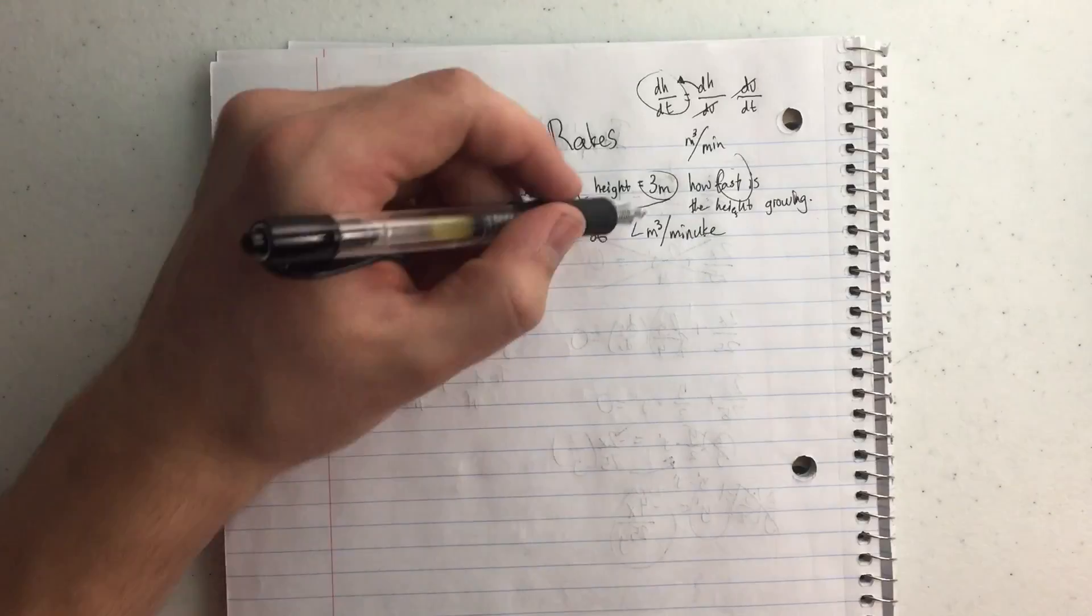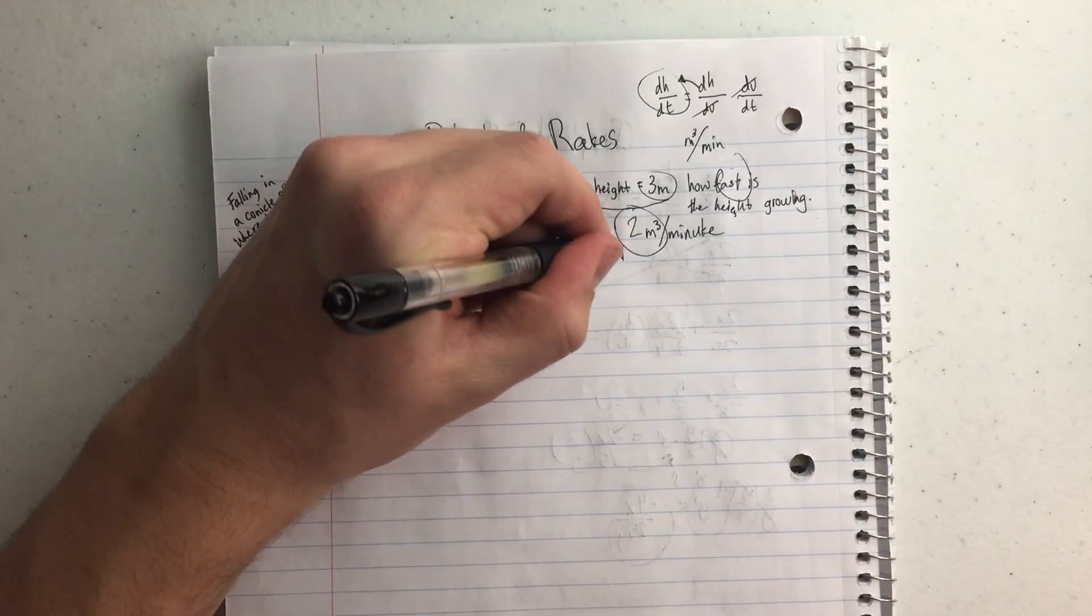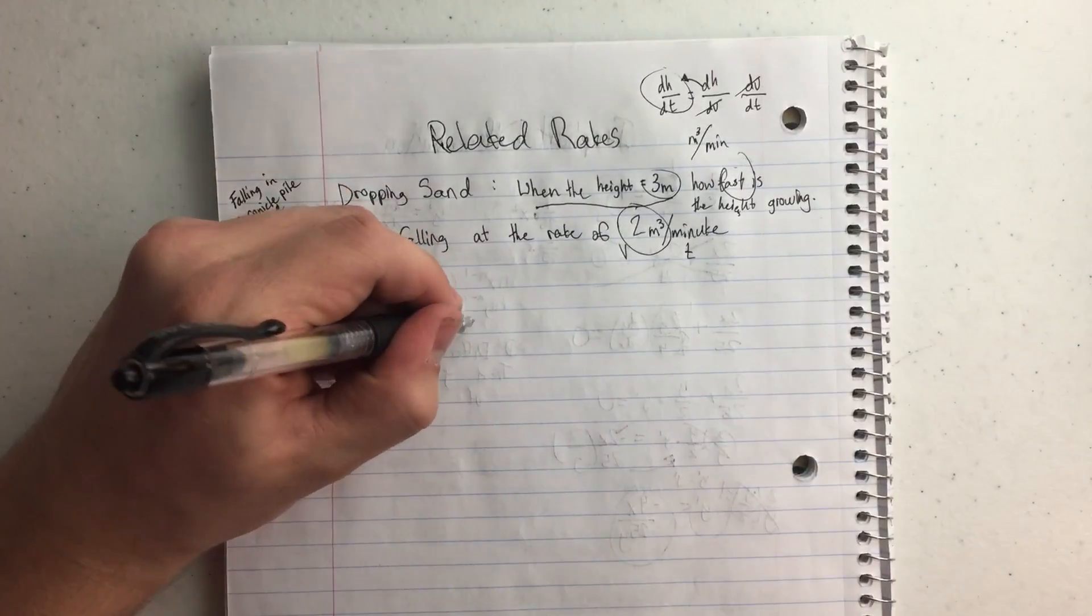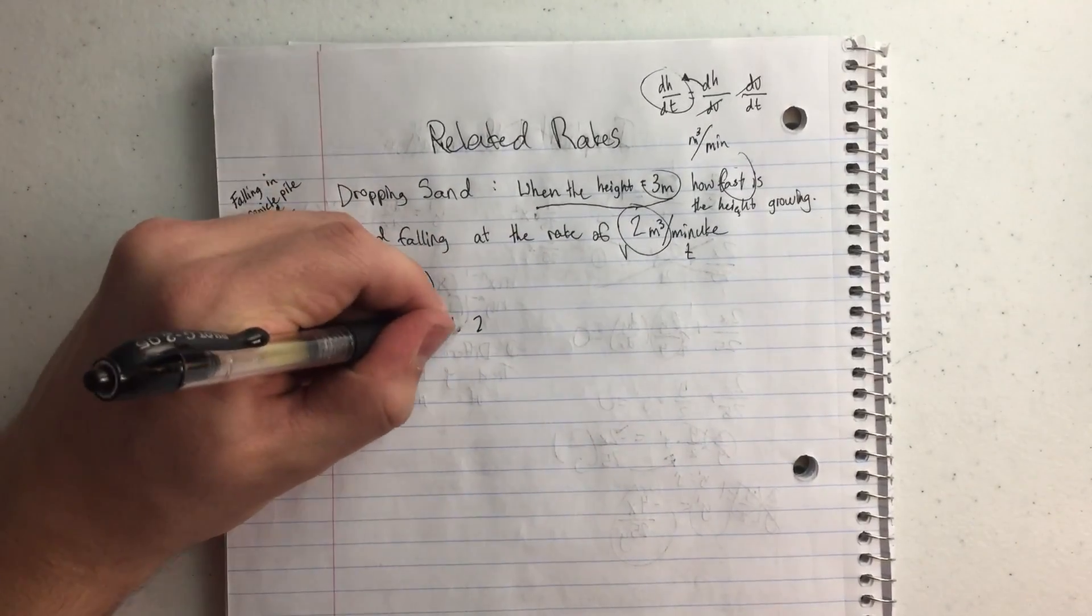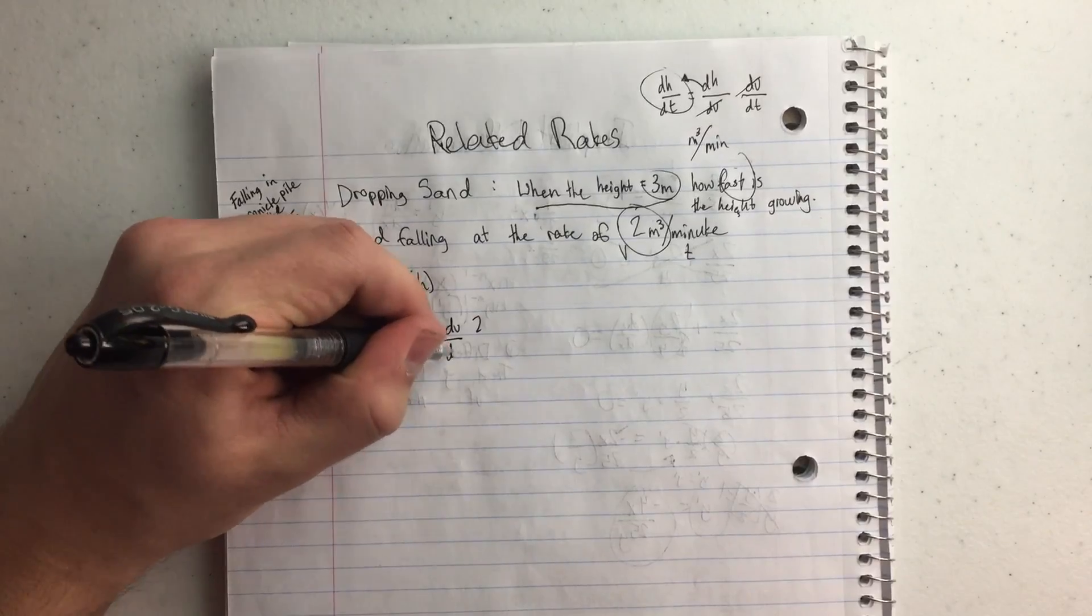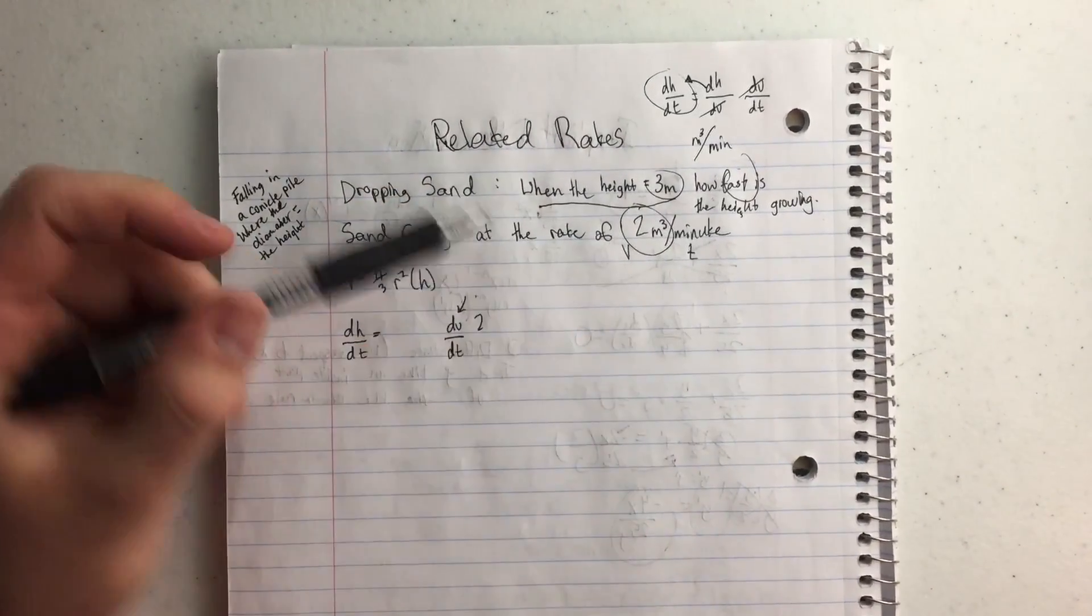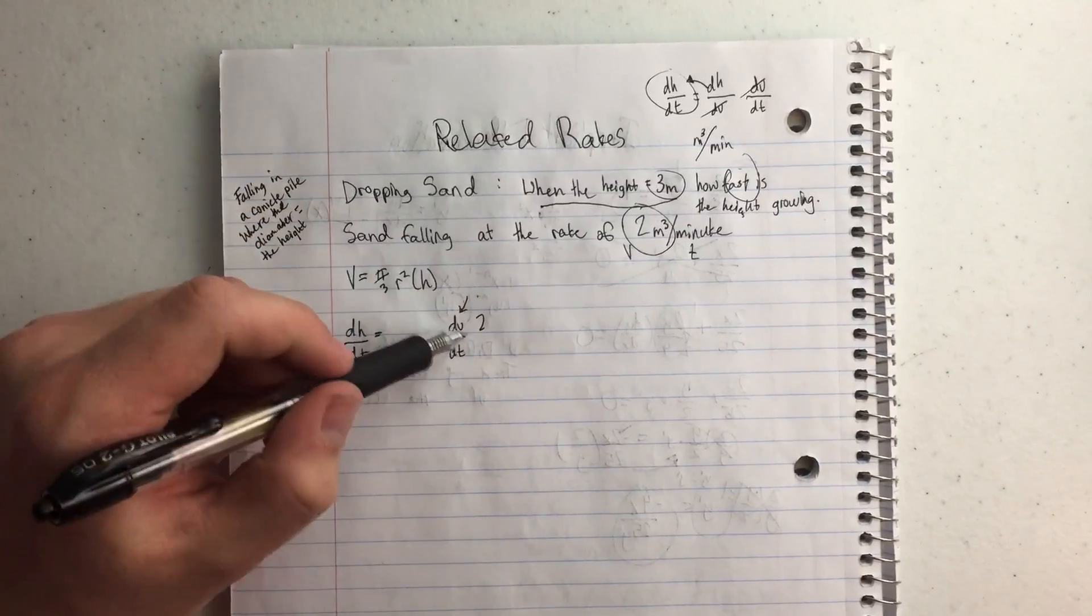I know the volume, this is my volume falling per time. So the rate of it falling is 2, so the dv over dt, the rate of sand falling over the time. That's that number.